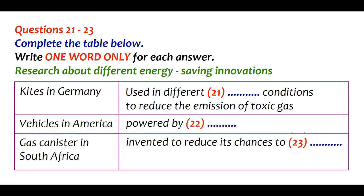I found that apart from the traditional fossil fuel industry, there's a German firm that has initiated a project using kites to generate power. Really? I've never heard of it before. How does it work? As a substitution for traditional fossil fuels that release toxic gas into the atmosphere, the power generating kites can function in any weather. Compared to conventional wind turbines, such kites can produce twice as much energy because the overall power density is proportional to altitude.